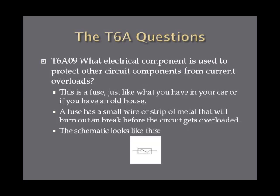What electrical component is used to protect other circuit components from current overloads? This is a fuse, which is another easy answer — just like the one in your car or an old house. A fuse is a small piece of wire or strip of metal that heats up, burns out, and breaks, essentially shorting the circuit before it gets overloaded. The schematic looks like a box with two leads and a squiggly line in the middle.